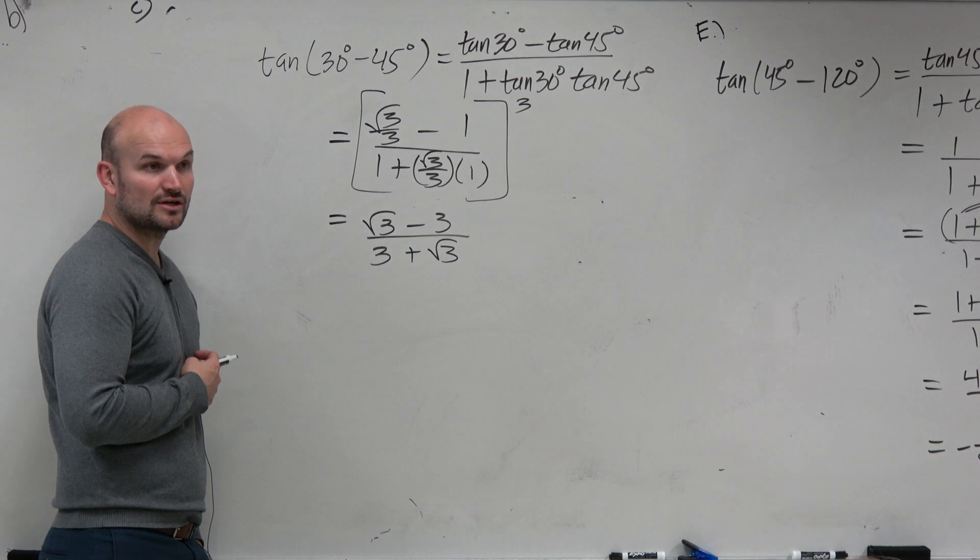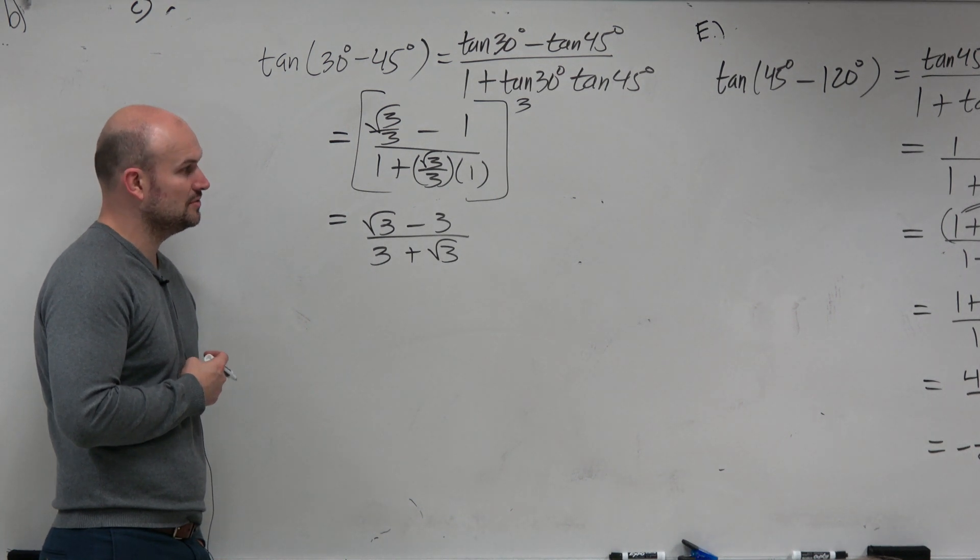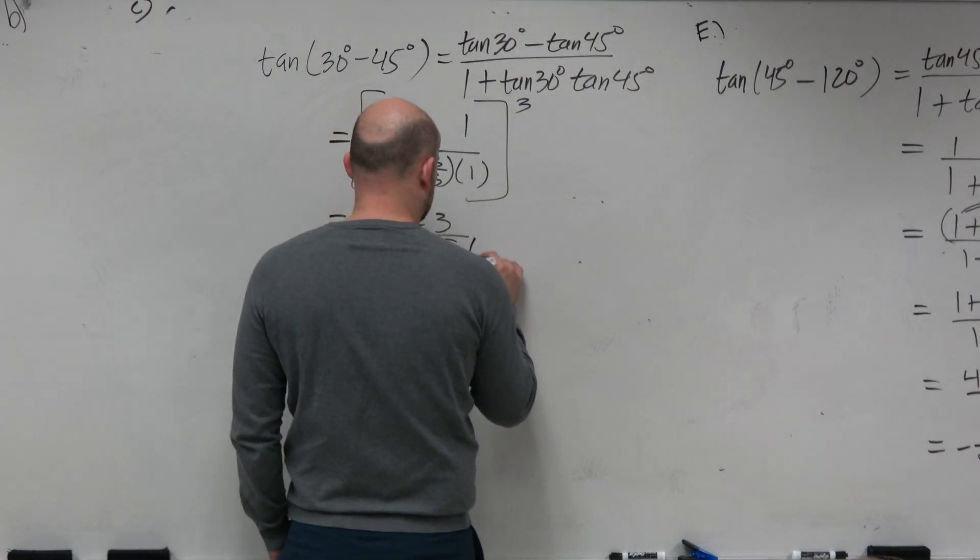So therefore, we need to get the radical off the denominator. The best way to do that is to multiply by the conjugate, which is rationalizing the radical.